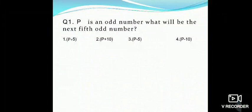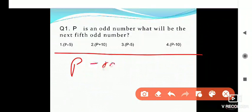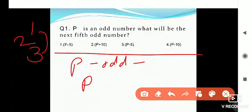Suppose P is an odd number and we have to find the next odd number. The gap between consecutive odd numbers is 2 — for example, 3 minus 1 equals 2. So for the next odd number, add 2; for the 2nd odd number, add 4; for the 5th, add 10; and in general, double the position number.